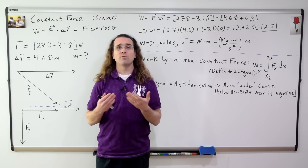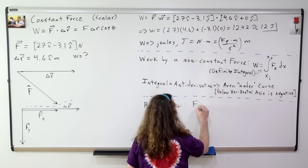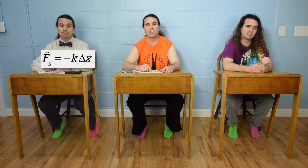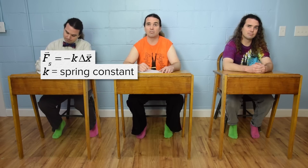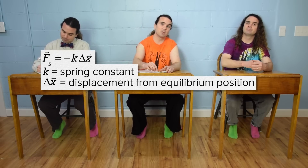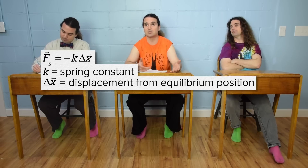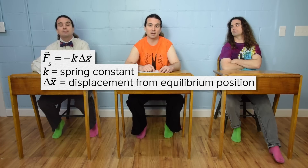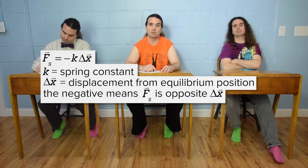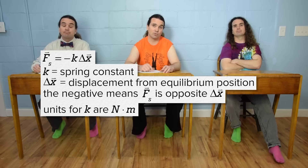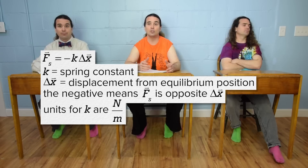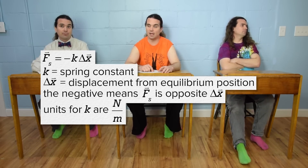Now let's talk about the force caused by a spring — Hooke's Law. The force of a spring equals negative kx. K is the spring constant, a measure of how much force it takes to compress or expand the spring per meter. Delta x is the displacement of the spring from its equilibrium position. The negative means the force of the spring is opposite the direction of the displacement. The spring constant has units of newtons per meter, not newton meters — joules are newtons times meters.